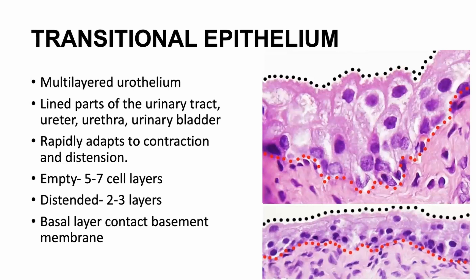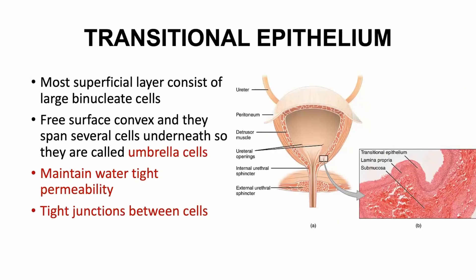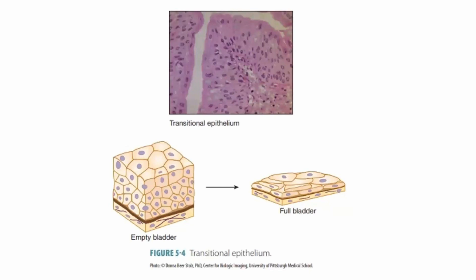When your bladder gets to 0.5 liters you get an urge — the bladder is distended. When distended, it makes sense the cell layer would be smaller, so you have about two to three cell layers. When the bladder is empty, you have a transition where there are five to seven cell layers. The more superficial layer of the transitional epithelium consists of large binucleate cells. The free surface is convex — these are called umbrella cells — with tight junctions. This image shows the difference between a full and an empty bladder.